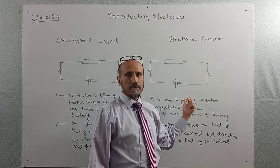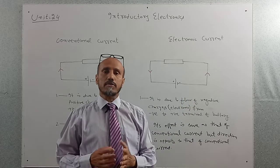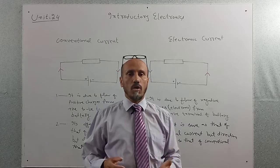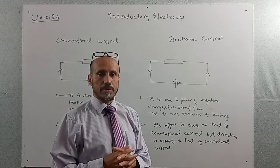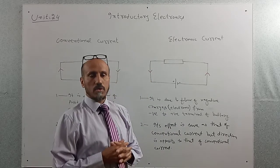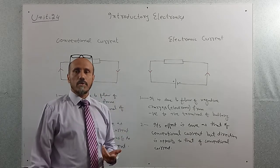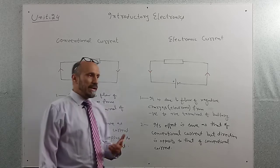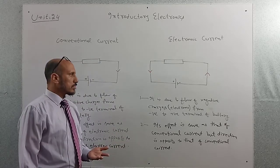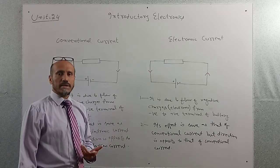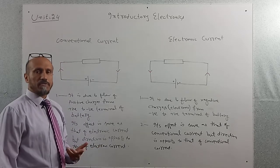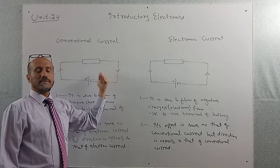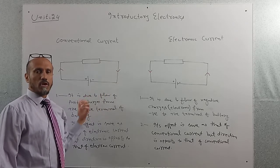In reality, electron current actually exists. But since scientists made all their concepts, theories, and diagrams on the basis of conventional current, till today we are also using, by default, the flow of current as conventional current. So whenever a question is given in the exam and we have to show the direction of flow of current, by default we will show the flow of current from the positive terminal of the battery to the negative terminal.